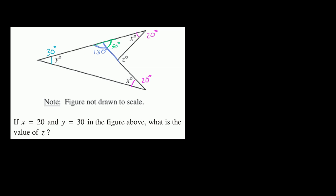So if this is 50 degrees, what do we know about this angle right over here? Well, 50 plus 20 plus this is going to be 180, or another way of thinking about it, this is going to be 180 minus 50 minus 20, or 180 minus 70. So this is going to be 110 degrees.